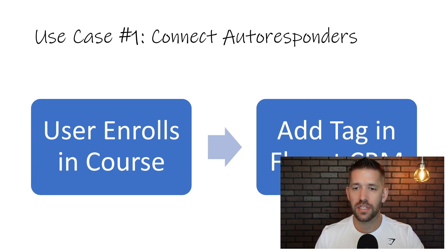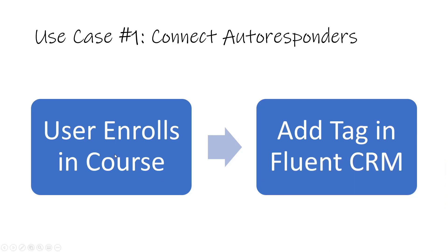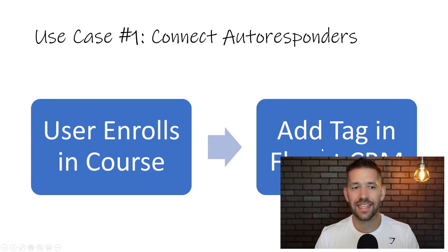What I mean is you might be using other tools like ThriveCart or SendOwl that might connect with some of your tools, but maybe not your email autoresponder. In the old world before Thrive Automator, you would have to have every tool in your stack connect to every other tool, and it simply was not feasible.